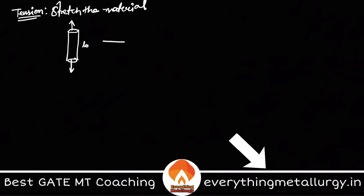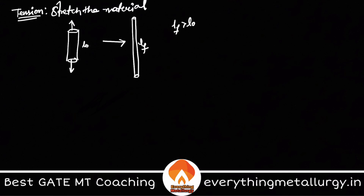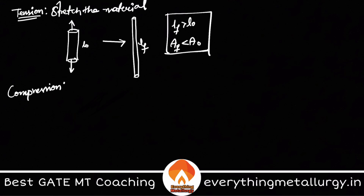In tension, we usually stretch the material. If I have a rod of length L-naught and I try to pull it in a longitudinal direction, it will elongate to length L-f. As you can see, the length increases but the area of cross-section decreases. So in tension you will always find a reduction in area and an increase in length.